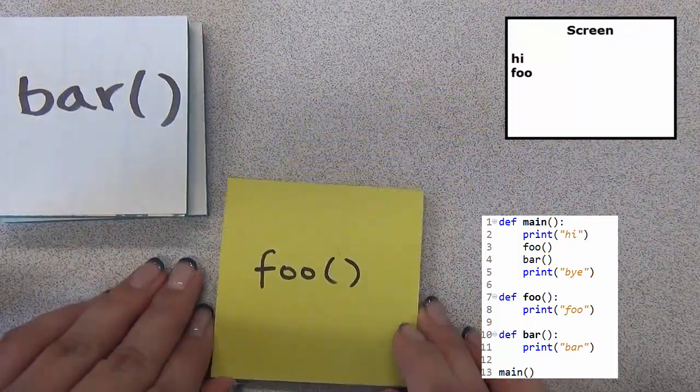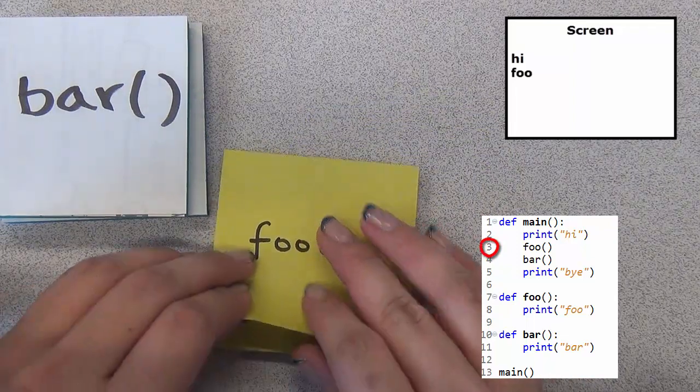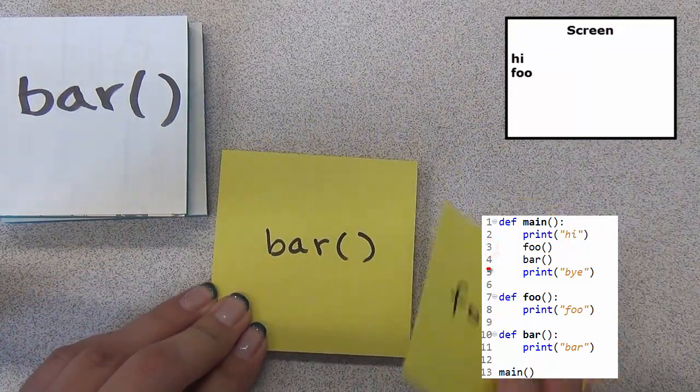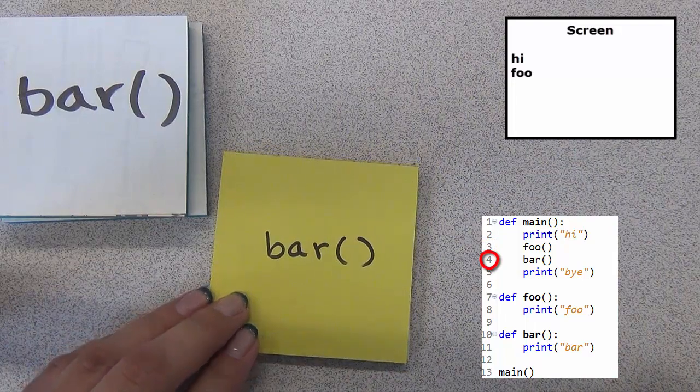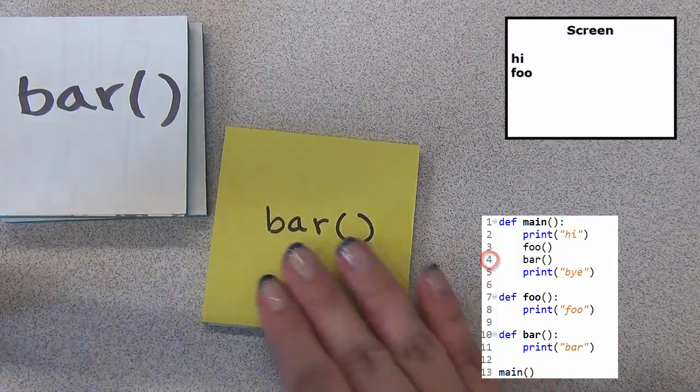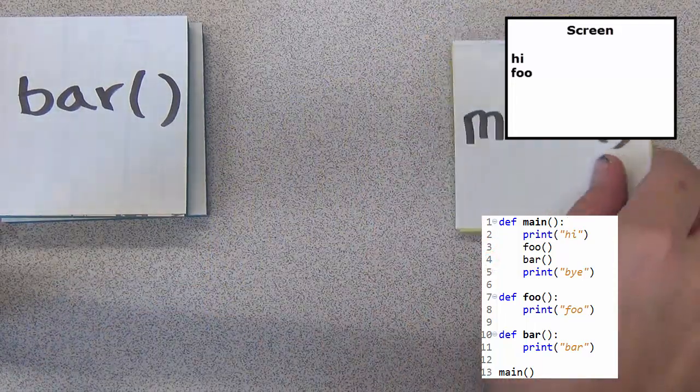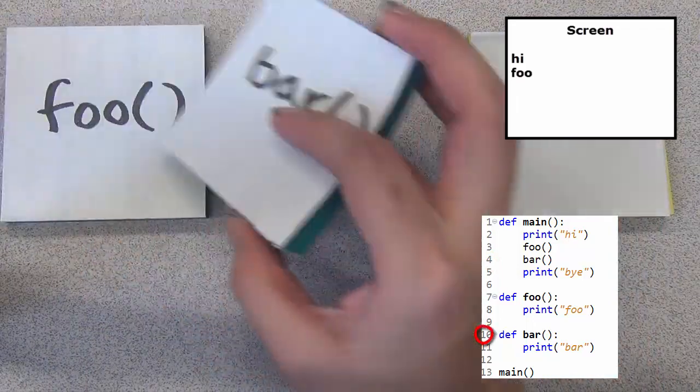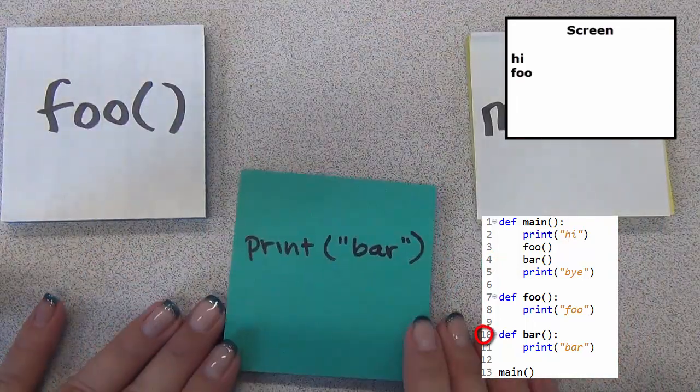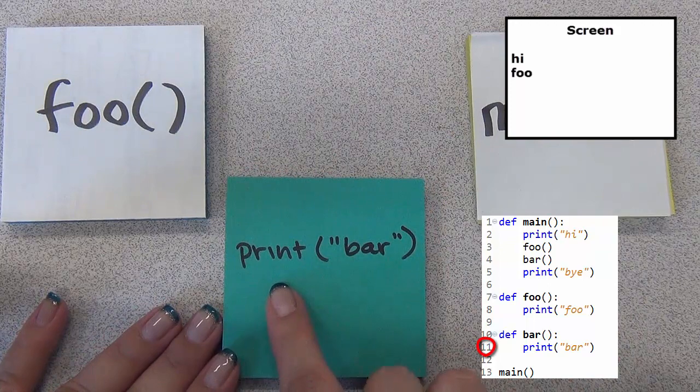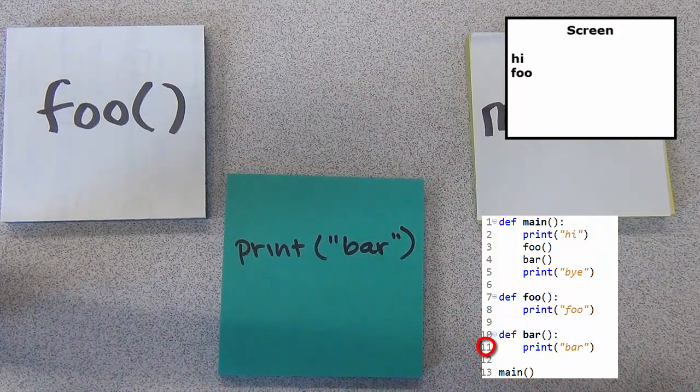We have completed the execution of foo and move on to the next line, which calls the function bar. Again, I leave main, look for the function bar in the stack, and go to the first line, which says to print bar to the screen.